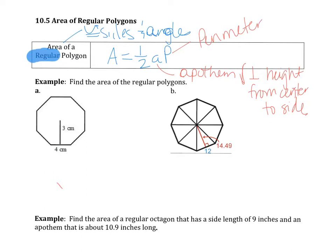So, again, it must be a regular polygon. I'll draw a regular polygon — I'll label all the sides as congruent and all the angles as well. And then that apothem is from the center to the side, it's that right angle. It's kind of hard to see, but it's right there.